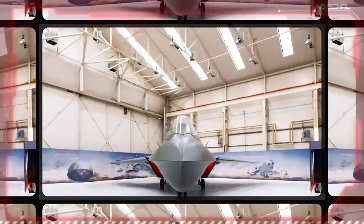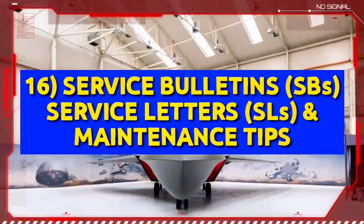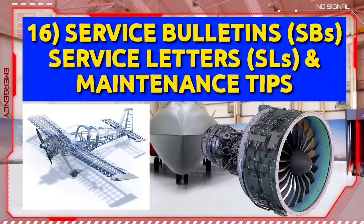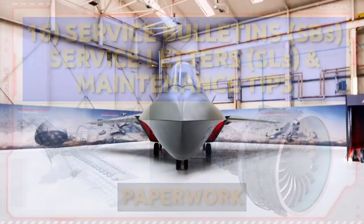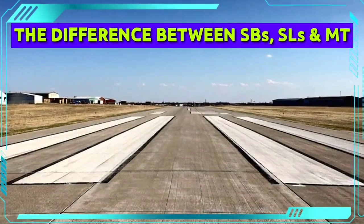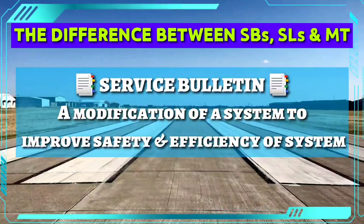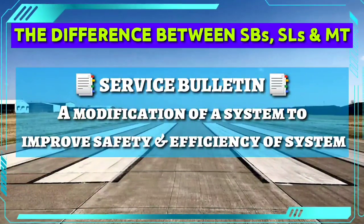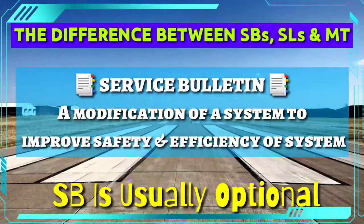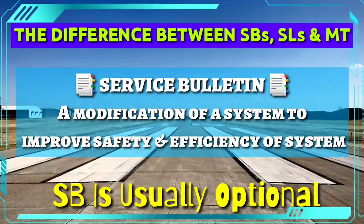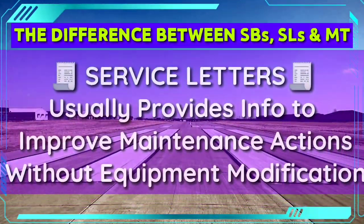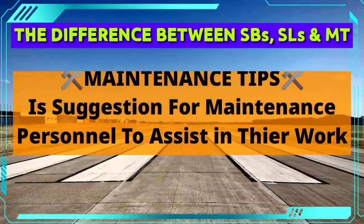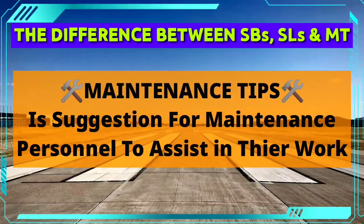Finally, we have Service Bulletins, Service Letters, and Maintenance Tips. Whenever the airframe manufacturer or engine manufacturer has modifications or suggestions for improving maintenance or servicing standards, they issue appropriate paperwork to the affected airlines. A Service Bulletin is usually a modification of a system that provides improved safety or operation and includes a detailed description of work and parts required. An SB is usually optional unless a national authority mandates it. Service Letters provide information to improve maintenance tasks without equipment modification. A Maintenance Tip is a suggestion to assist maintenance personnel in their work or improve conditions.